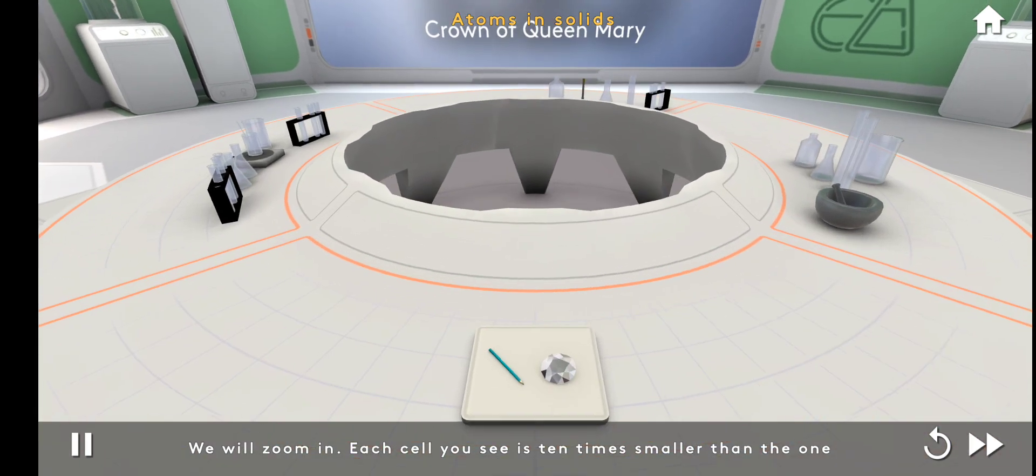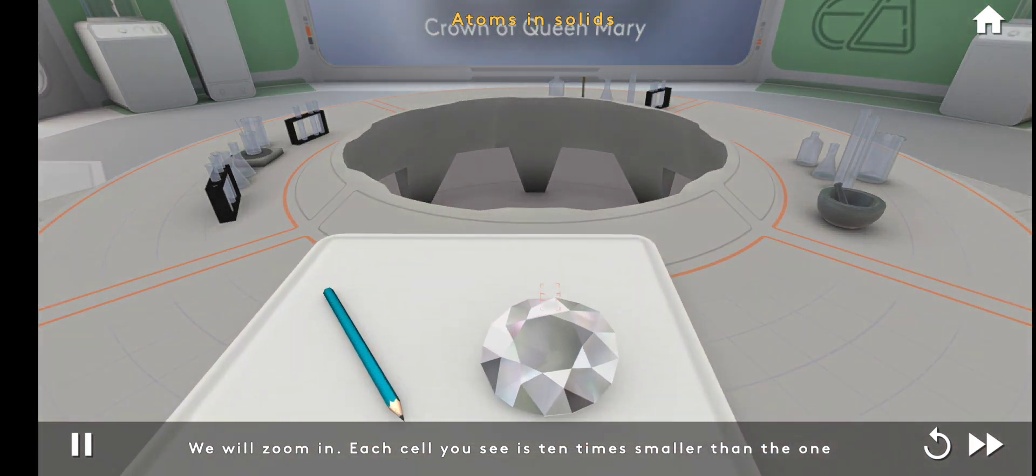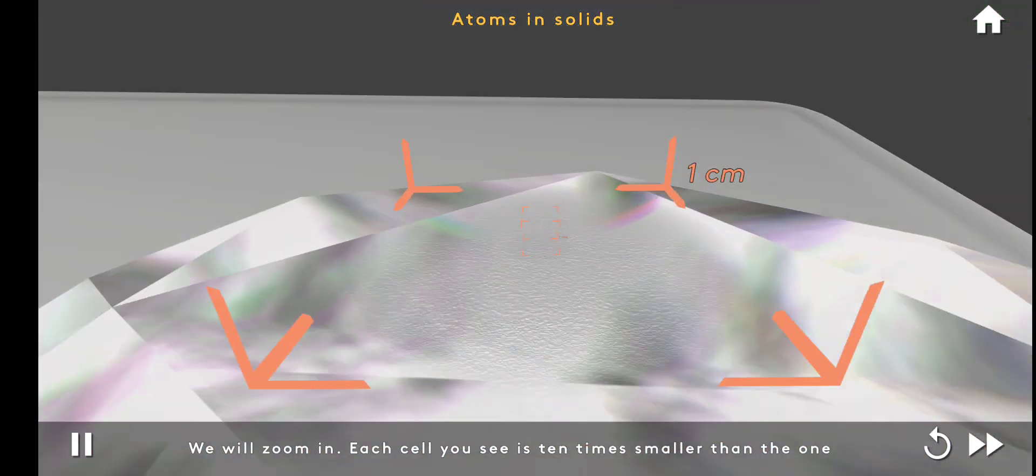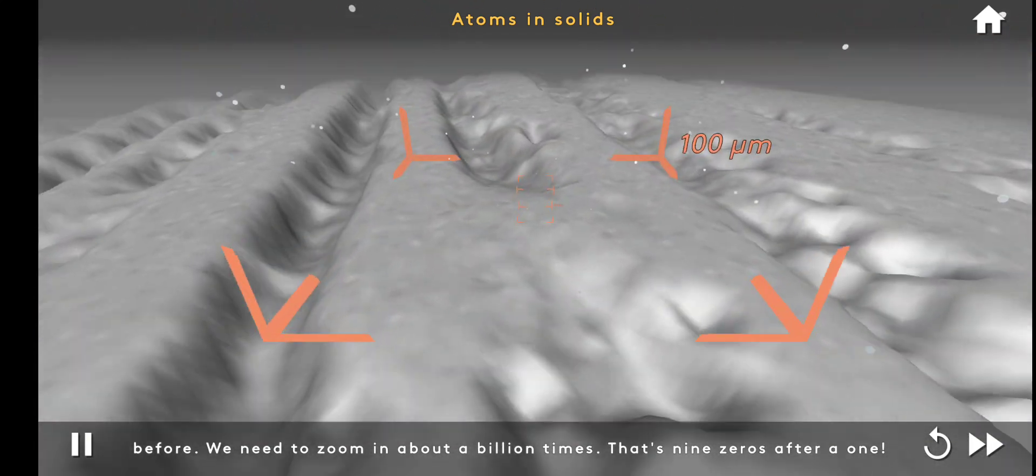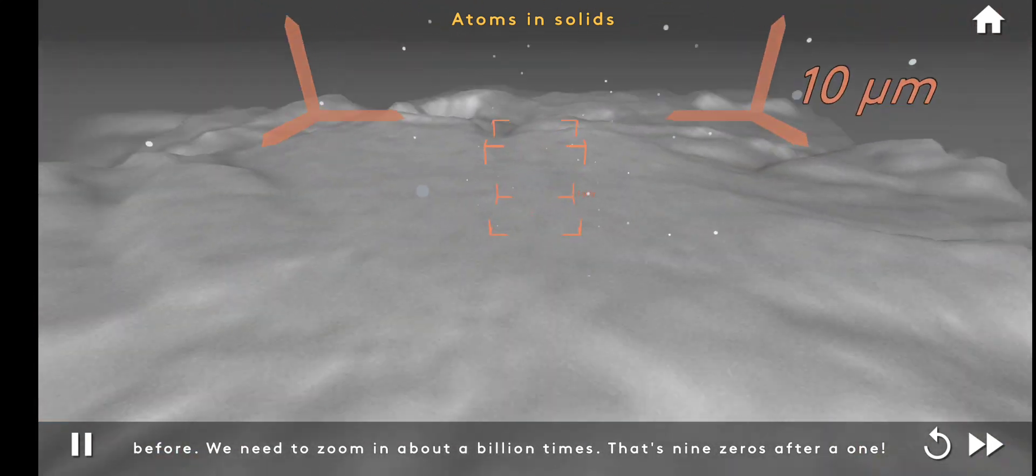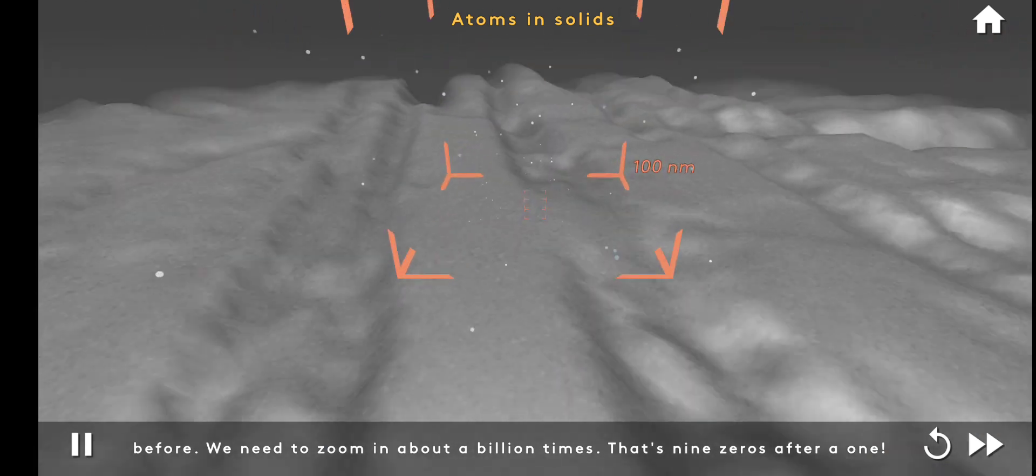Ready to dive? We will zoom in. Each cell you see is ten times smaller than the one before. We need to zoom in about a billion times. That's nine zeros after a one.